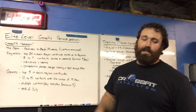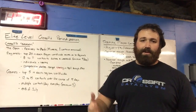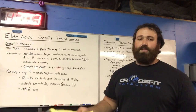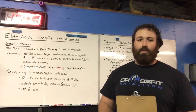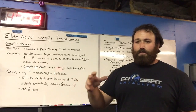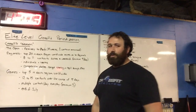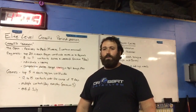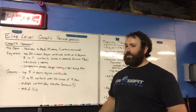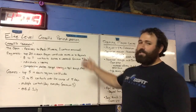The CrossFit Open is the first qualifier for the CrossFit Games. It starts in February and ends in late March. They announce one workout on a Thursday evening and all participants have until Monday evening to submit their best score. Participants can do the workout once, twice, three, four — however many times they want — to get the best score, then submit their results and video with a judge to verify movement standards. It's five weeks long, starting the last week of February and ending the last week of March.